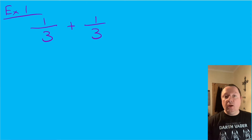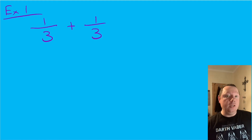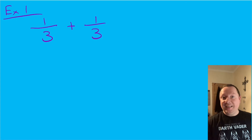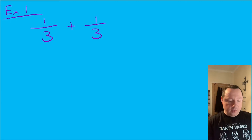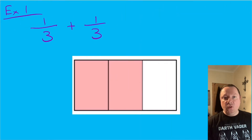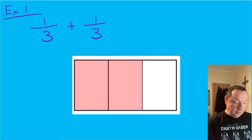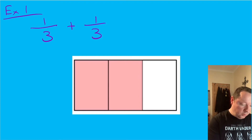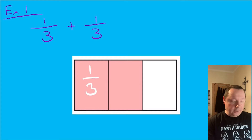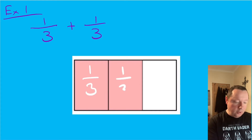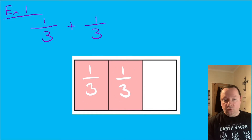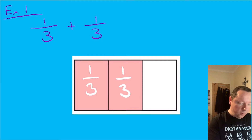Example one. I want to do a third plus a third — a very simple thing to do, but a common mistake is some people think that might be two sixths, and I'm going to show why not. We can model this by drawing a bar and splitting it into three equal parts, so each part would be a third. I've shaded in two of those parts — one third plus another third — and counting them up I've got two thirds. So the answer is simply two thirds.